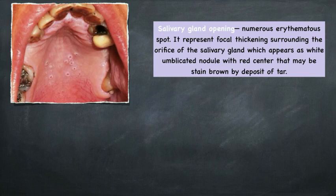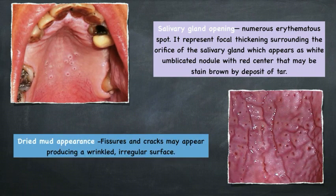Another classical feature is the dried mud appearance. Initially there is reddening, which subsequently becomes grayish-white, then thickened and fissured. These fissures and cracks give the appearance of a wrinkled and irregular surface, creating a dried mud appearance. So dried mud appearance is seen in stomatitis nicotina, or the reverse smoker's palate.